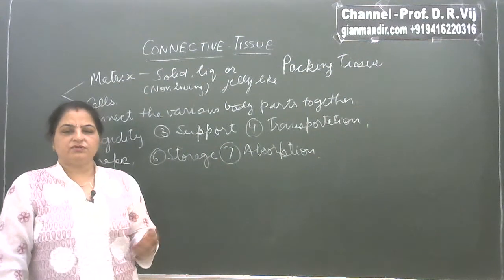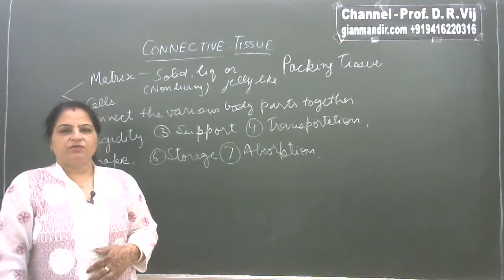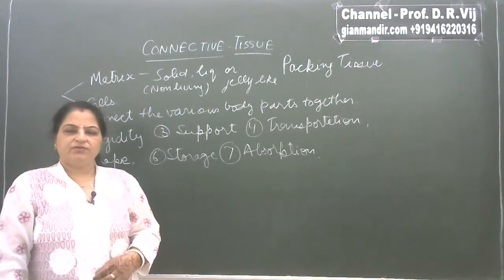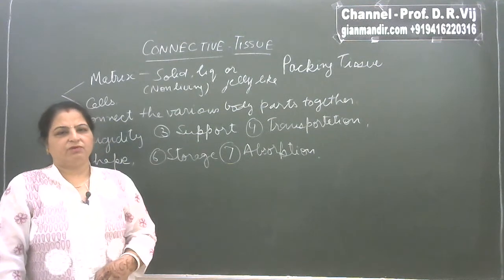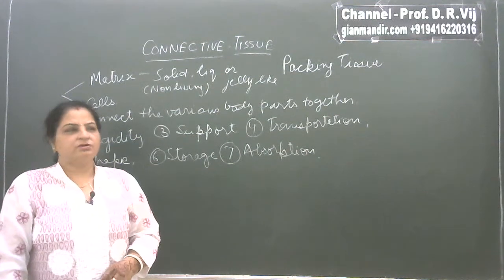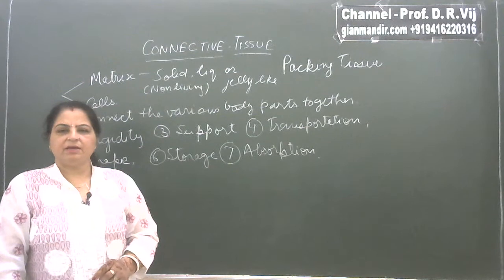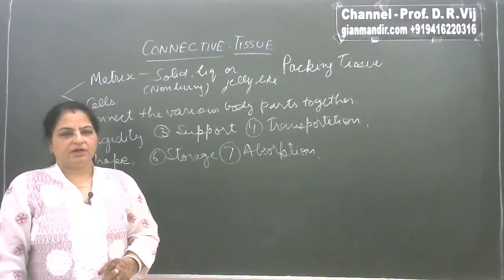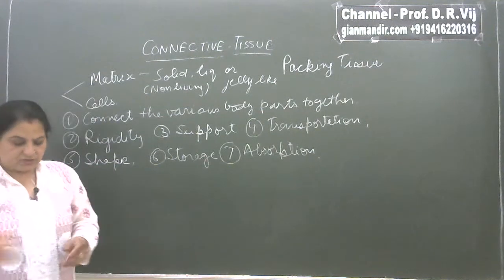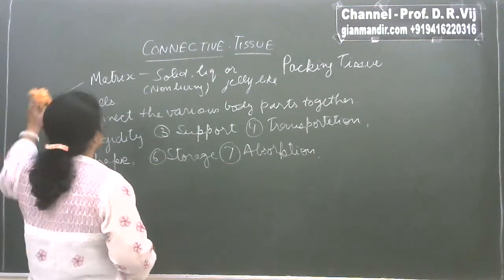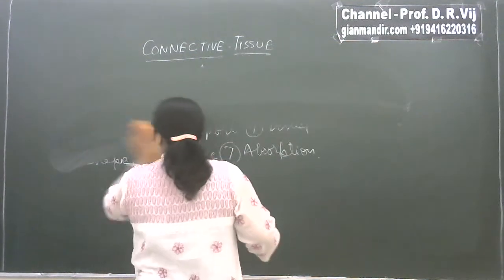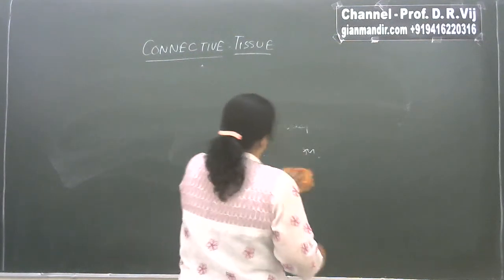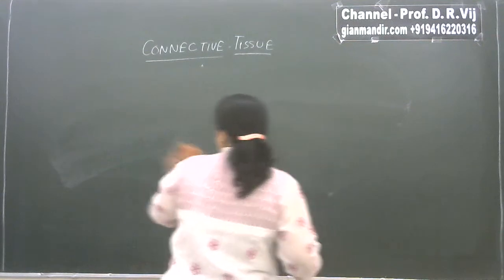Depending upon their positions and functions, connective tissues may have different kinds of arrangement, and based on that they have different functions. Today we will discuss the various kinds of connective tissues that can be observed in an animal body. The first type is areolar connective tissue.